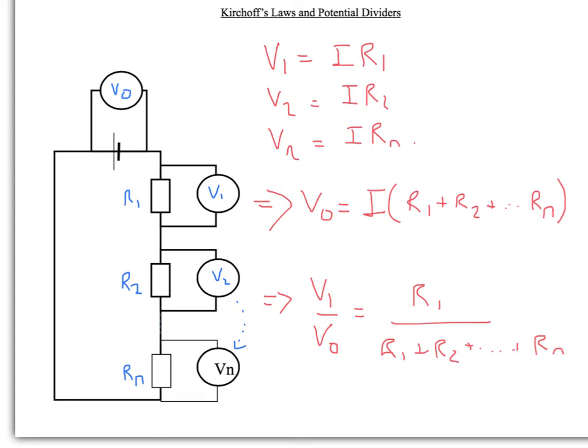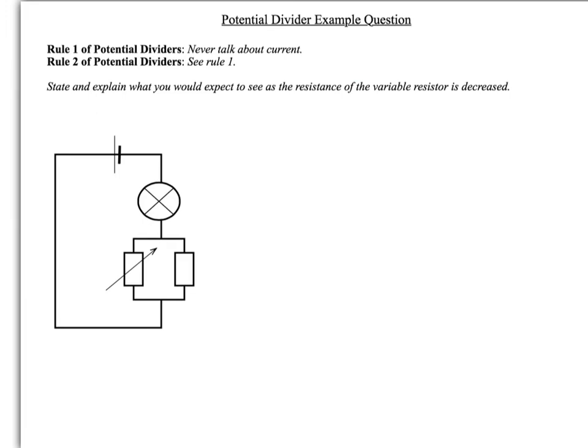Let's look at how you would actually apply this to a question. First of all, rule of potential dividers: when you recognize the question that you need potential dividers for, never talk about the current. So that's rule number one. Rule number two is, see rule number one. Never, ever, ever talk about the current. This is the trap students fall into all the time. They try and talk about current in a potential divider, and you really can't do that, because you're essentially talking about how the potential difference is shared between these two. You don't really know what's going to be going on with the current here.